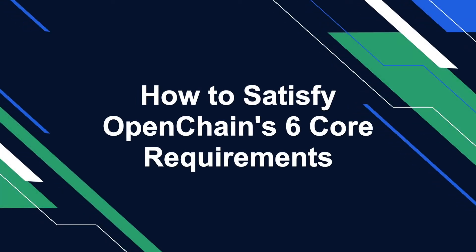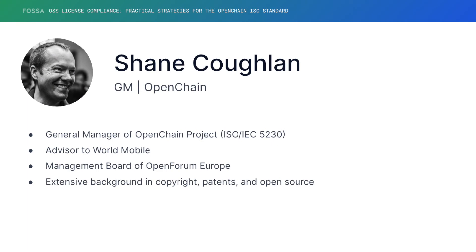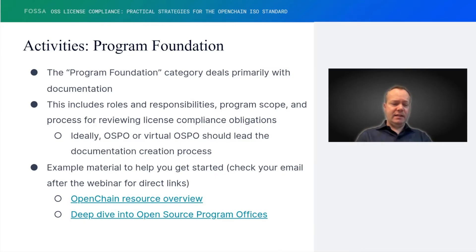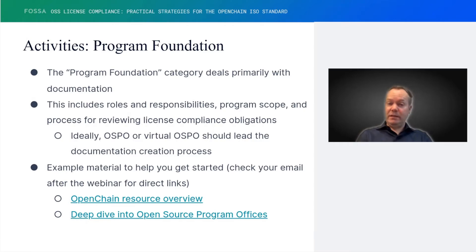How do you know that you've met the spec? How do other staff members know? How do partners know? How do future members of your own staff know? A program foundation is setting the context for how you'll do open source license compliance. And in the case of the OpenChain ISO 5230 standard, this is really about understanding the roles and responsibilities, the scope of the program, and the type of processes you should have in place.